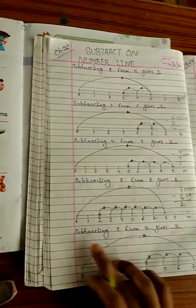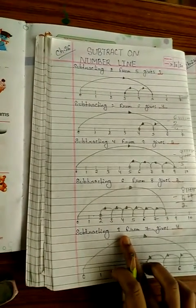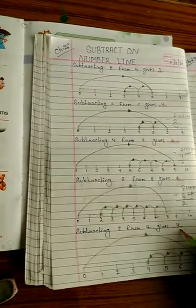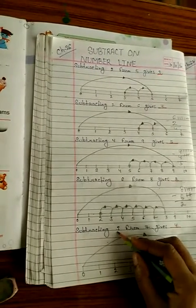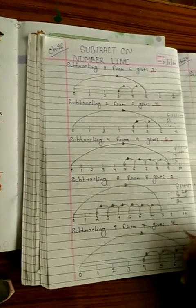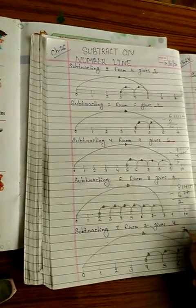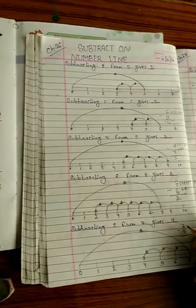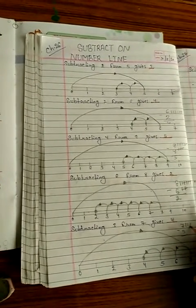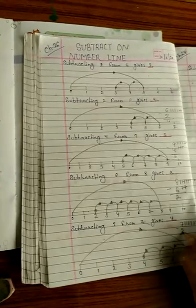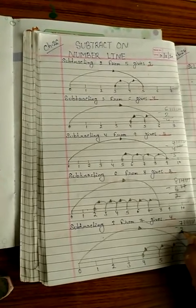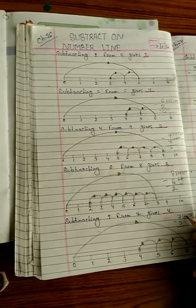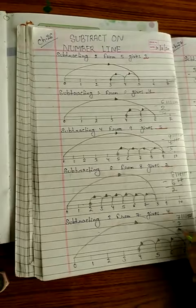Next question: subtracting 3 from 7 gives 4. If we do 7 minus 3, the answer will be 4. First, draw 7 lines: 1, 2, 3, 4, 5, 6, 7. And how many lines do we have to cancel? 3: 1, 2, 3. Then the left ones: 1, 2, 3, 4. So the answer is 4.